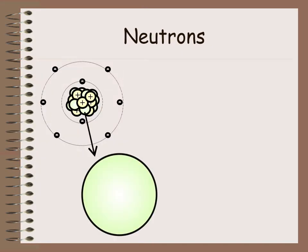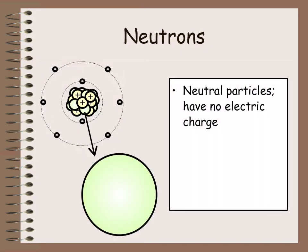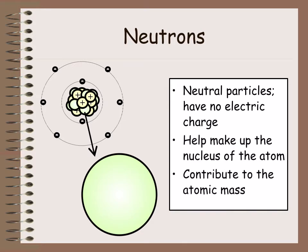Neutrons here are the neutral particles, so they have no electric charge. They are just with the protons in the nucleus. And they also contribute to the atomic mass. So they, along with the protons, you add those together, you get the mass of the entire element.